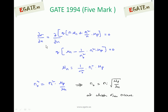Taking dσ/dn of (nqμn + Ni²/n · qμp) and setting it to zero: differentiating gives qμn − (1/n₀²)·Ni²·qμp = 0. This yields μn = (1/n₀²)·Ni²·μp. Solving for n₀: n₀² = Ni²·μp/μn, so n₀ = Ni·√(μp/μn). At this electron concentration n₀, the conductivity is minimum.